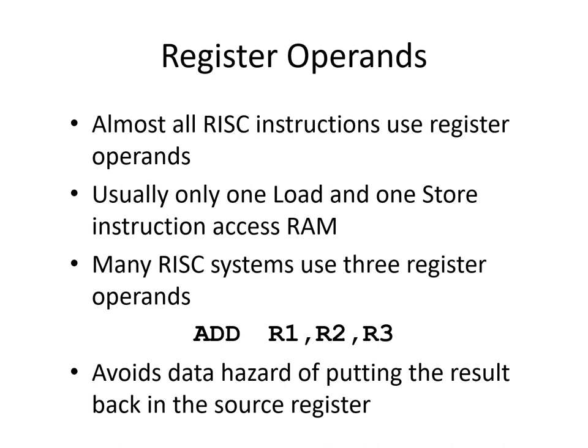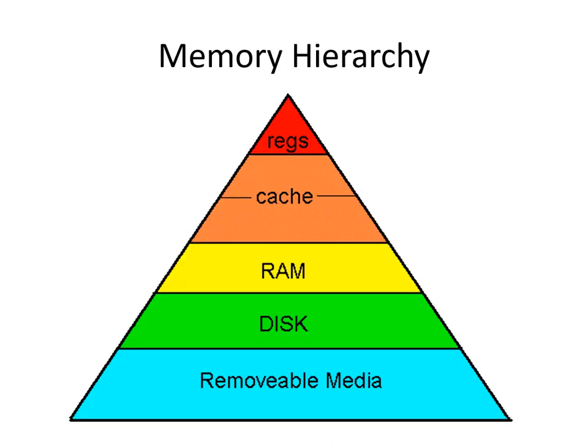Almost all RISC processors use register operands. Unlike the Intel processor, where you can do something like add EAX with a memory operation, all the operands for a RISC machine will come from registers. Usually only two instructions access memory: the load and the store instructions. Everything else takes its operands from registers. For example, add R1, R2, R3 adds the values in R1 to R2 and puts the result in R3. Putting results in registers helps avoid data hazards, and registers are the fastest memory access.